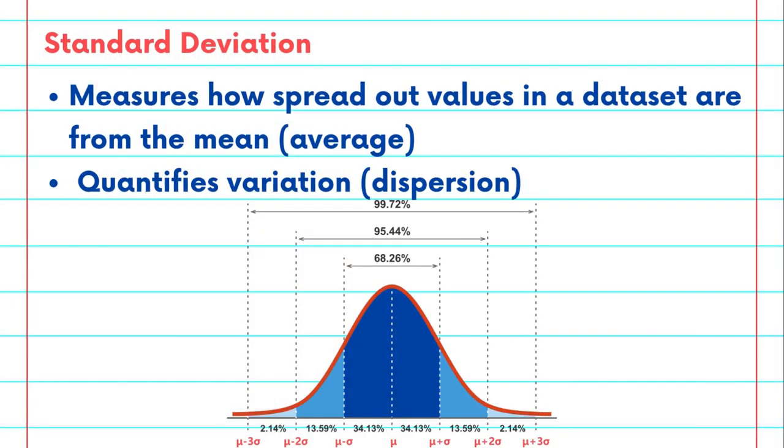But first let's start with a definition. The standard deviation measures how spread out the values in a data set are from the mean or average of the data set. It quantifies the amount of variation or dispersion in your data.